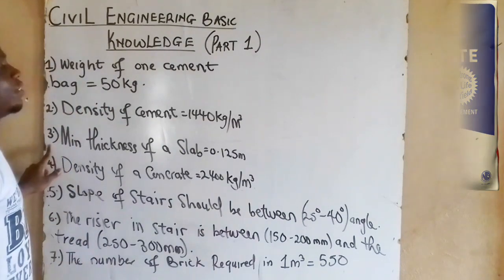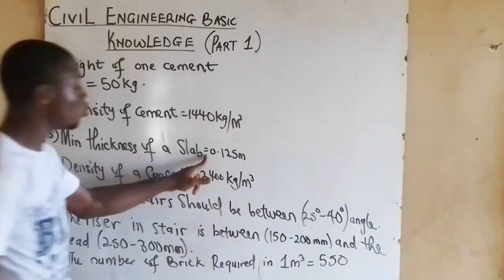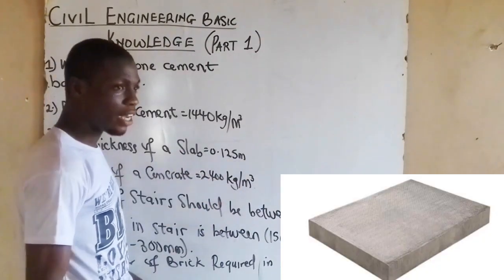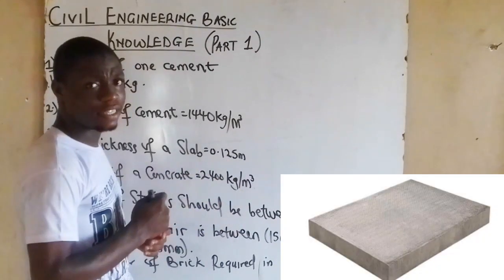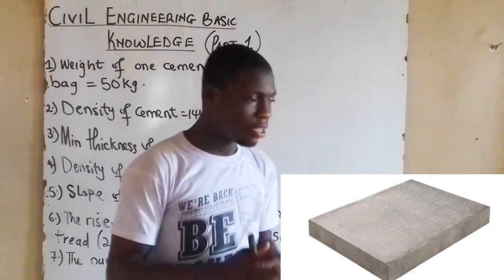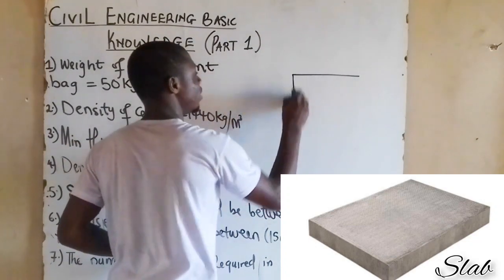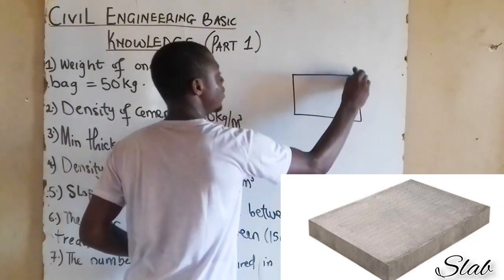Number three, minimum thickness of a slab is equal to 0.125 mm. What is the idea here? I believe you all know a slab. If I have a slab this way, here is a slab.